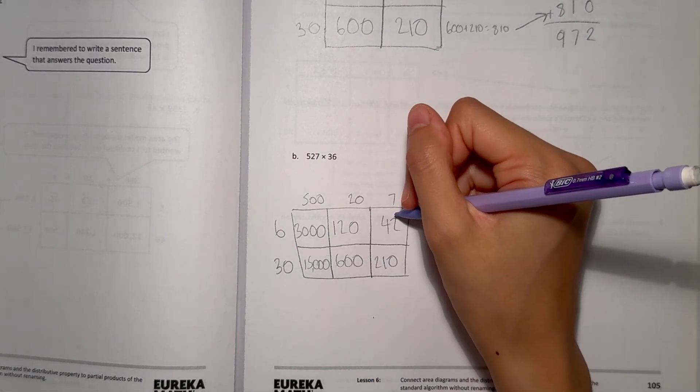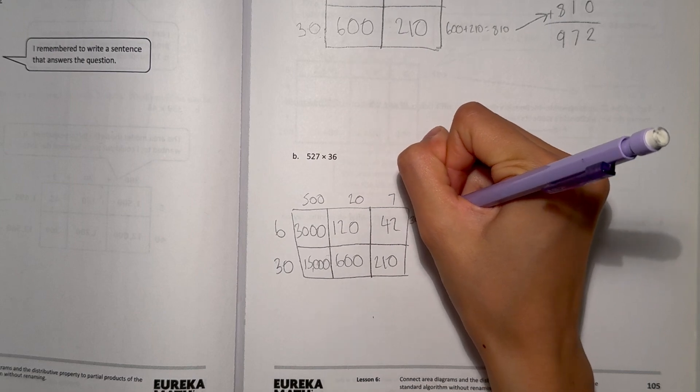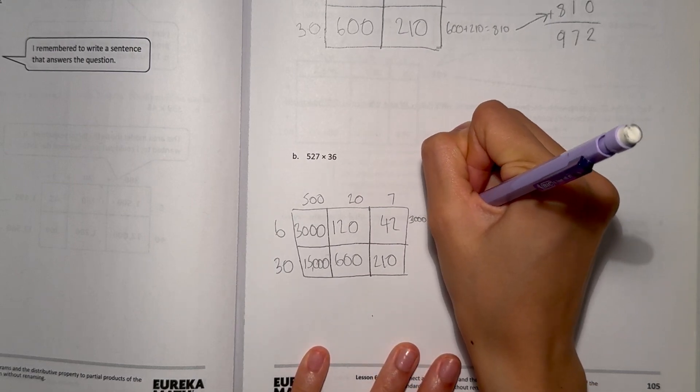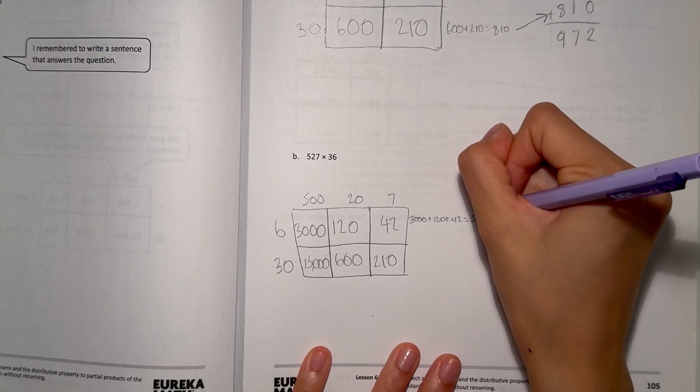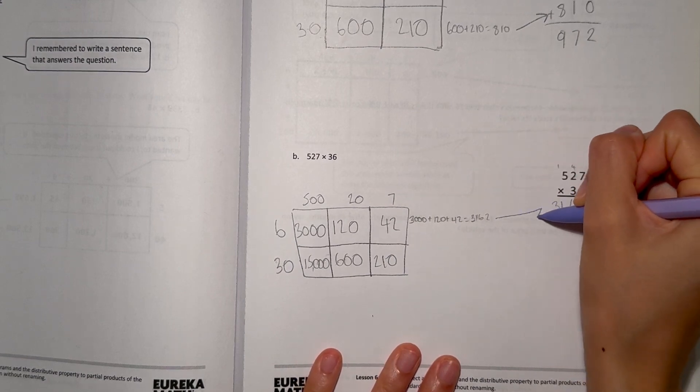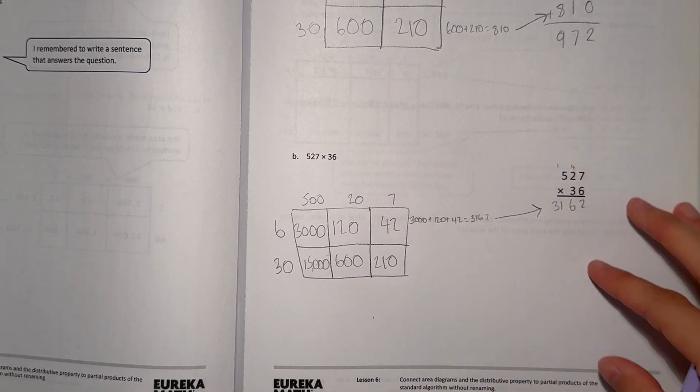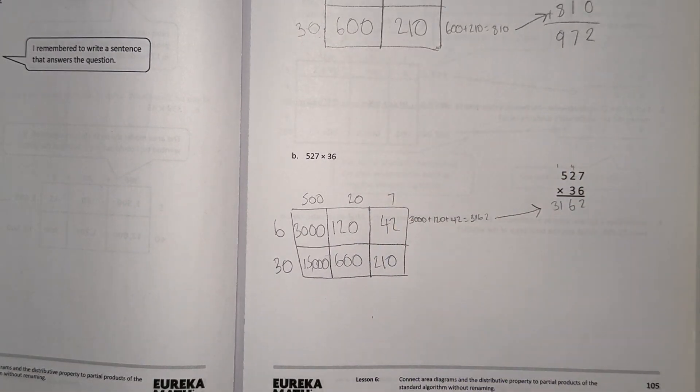Now let's look at the top half of our area model. 3000 plus 120 plus 42 equals 3162. So this number is equal to our number here on our standard algorithm multiplication. So that makes the first part of our area model.